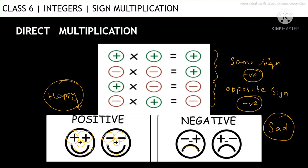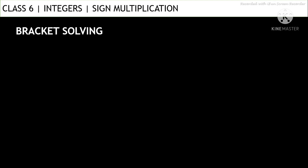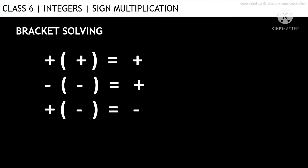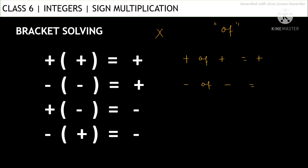Now here, instead of using the multiplication sign, we use brackets. Plus into plus is plus, minus into minus is plus, plus into minus is minus, and minus into plus is also minus — the same concept. Instead of using the multiplication sign, we use brackets and the word 'of' for better understanding. So instead of saying plus into plus, we say plus of plus.